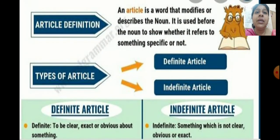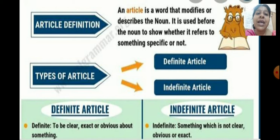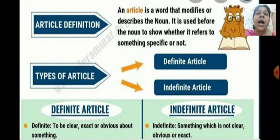Here you can see the definition of article. An article is a word that modifies or describes the noun. It is used before the noun to show whether it refers to something specific or not. There are two types of articles: one is definite article and the other is indefinite article. Definite article is used to be clear, exact or obvious about something. Indefinite articles are used when the idea is not very clear, obvious or exact — it is used when we talk about something in general.